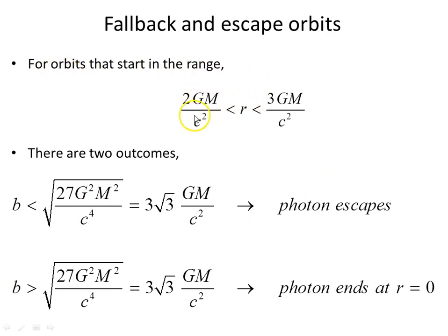Now for orbits that start in this range, from the Schwarzschild radius out to one and a half times the Schwarzschild radius, the two outcomes: b is less than 3√3 times GM over c², the photon escapes, and for b greater than 3√3 GM over c², the photon ends at r equals zero.